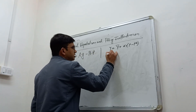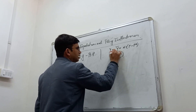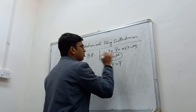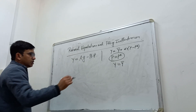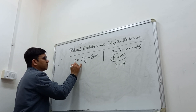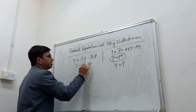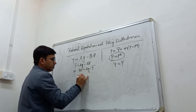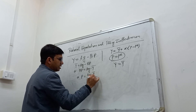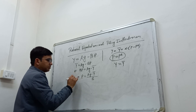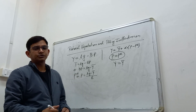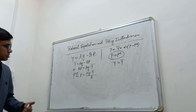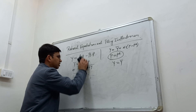We start with the rational expectation case where actual price P equals expected price PE. From this we find Y equals Ȳ — the natural level of output. If we plot the value of Ȳ in this equation, we get: P = PE = (AG − Ȳ)/B, and this is the expected price.